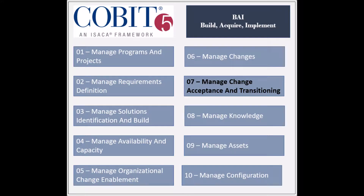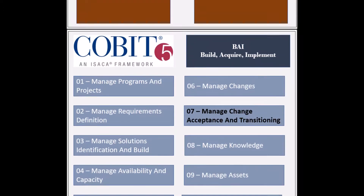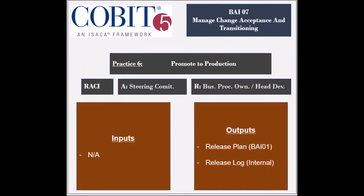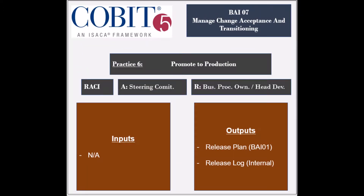The seventh process of the build-acquire-and-implement domain, called manage-change-acceptance-and-transitioning, has eight practices. The sixth practice is to promote change to production and manage releases.